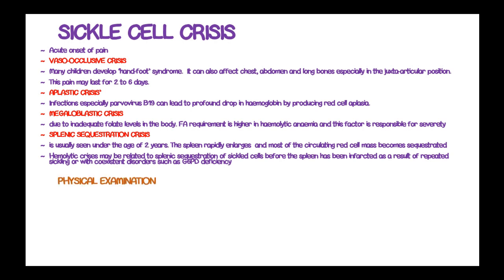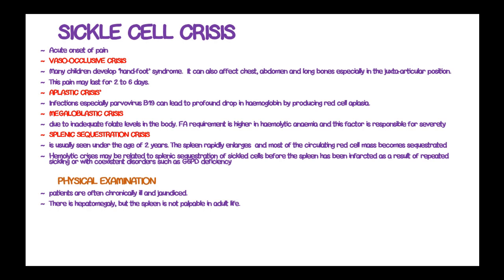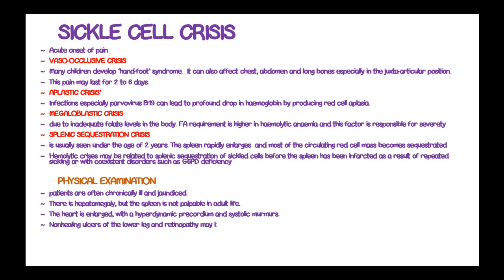During physical examination, patients are often chronically ill and jaundiced. There is hepatomegaly, but the spleen is not palpable in adult life. Cardiomegaly and a hyperdynamic precordium with systolic murmurs may be present, along with non-healing ulcers in the lower leg and retinopathy.